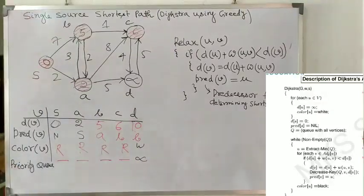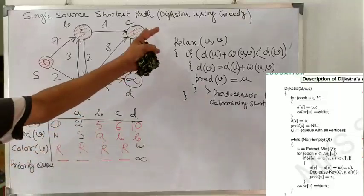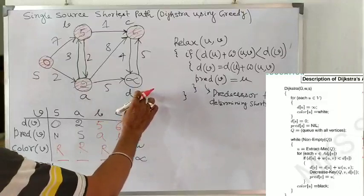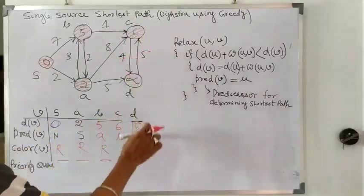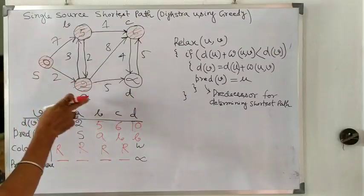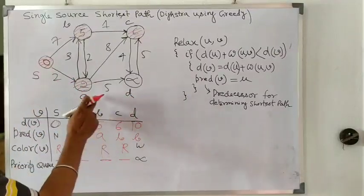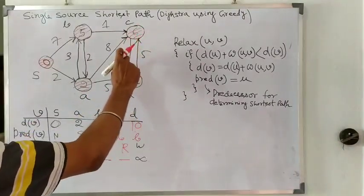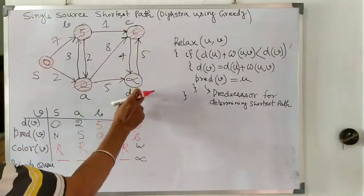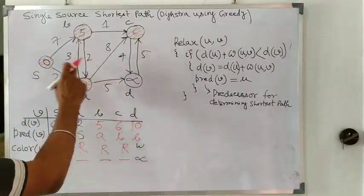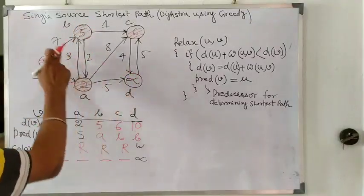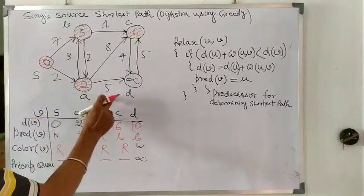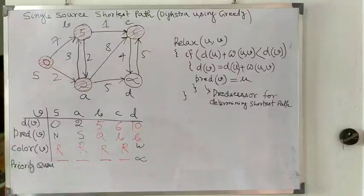Now we are at node C with value 6. From node C, we can reach the next node by value 6 plus 4 equals 10. But if we move from A to D, there is a path — we can get 5 plus 2 equals 7. From another path, 7 plus 2 is 9 and 9 plus 5 is 14. So comparing all paths: 5 plus 2 equals 7 is the smallest. So we have to update the table again.